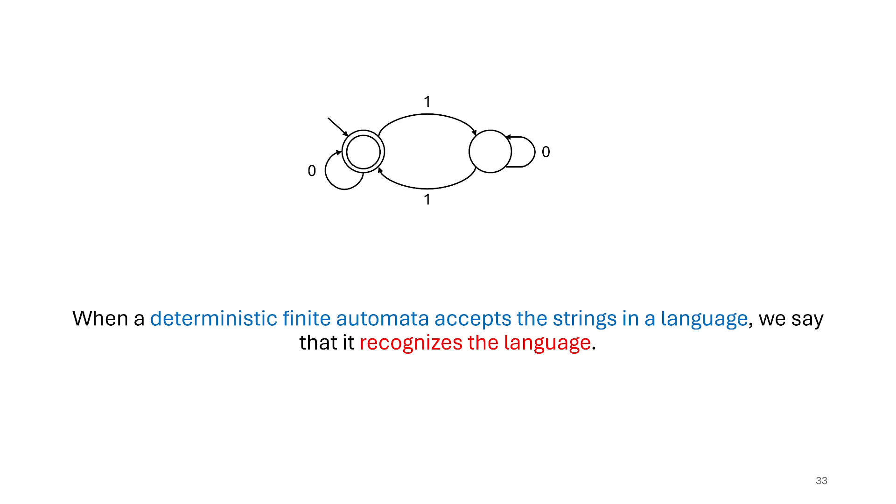So I've mentioned this already a couple times, but I'll just highlight it one last time, that when a DFA, a deterministic finite automata accepts the strings in a particular language, like we've just seen that this machine does, then we will say that it recognizes that language. We might also say it accepts that language, which is a sloppier use of language, but we sometimes do that. So we might say it accepts the language or recognizes the language.